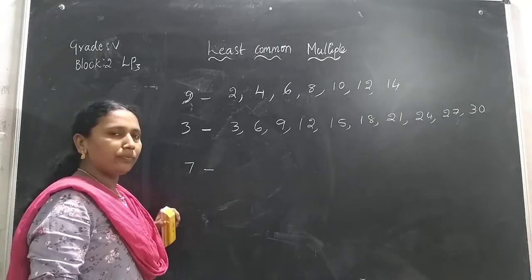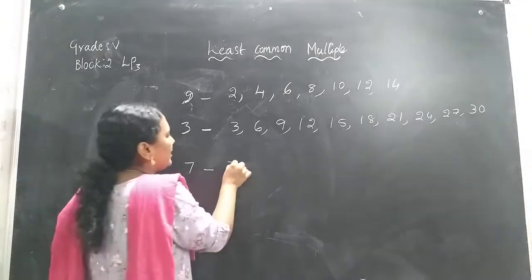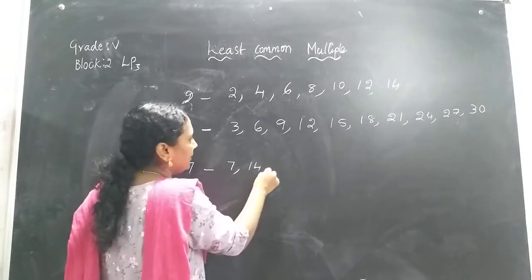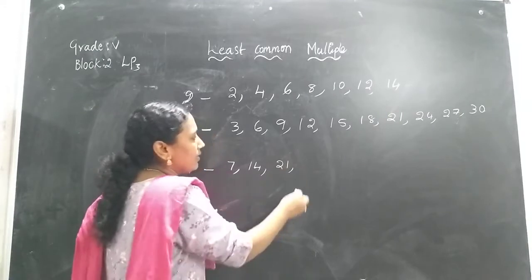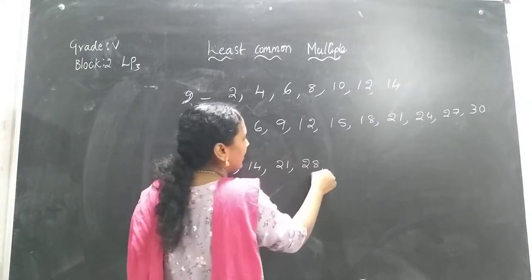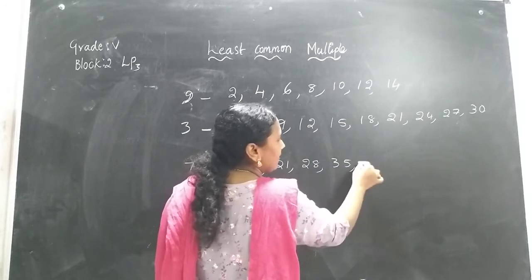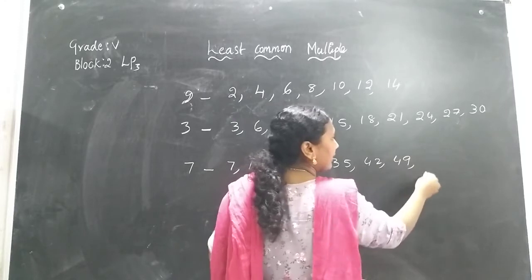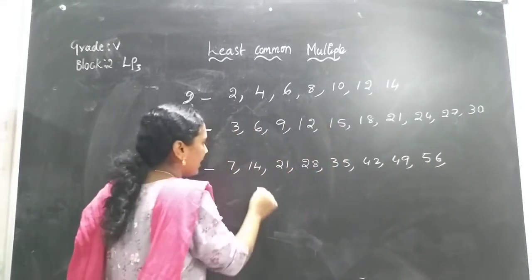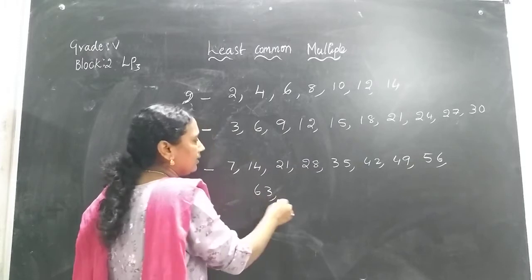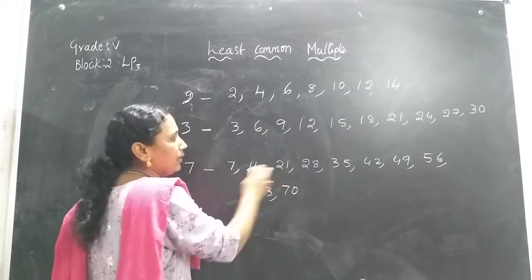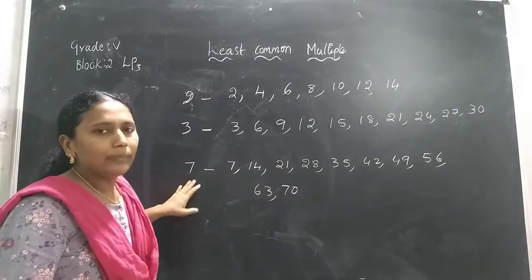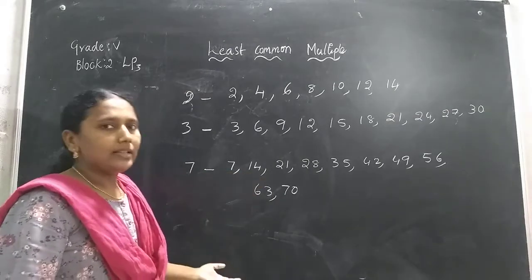Can I write the multiples for the number 7? Yes, I can. 7 ones are 7, 7 twos are 14, 7 threes are 21, 7 fours are 28, 7 fives are 35, 7 sixes are 42, 7 sevens are 49, 7 eights are 56, 7 nines are 63, 7 tens are 70. The multiples of a number are nothing but its table and skip count.